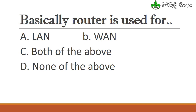As I have mentioned, the router is a 3rd layer network connection device. This is the 3rd layer of the OSI model — the network layer — and it is responsible for routing.